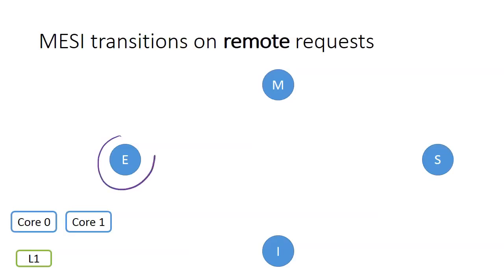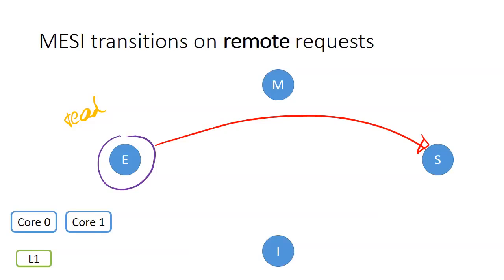If the cache line is in the exclusive state and core 1 is trying to read the data, then the cache of core 0 will send the data to core 1 and transition to the shared state, because a second copy of this cache line is being made. If core 1 is trying to write on the data, the cache line of core 0 needs to be invalidated, because a new copy will be established in core 1 in the modified state, signifying a single copy of the data.